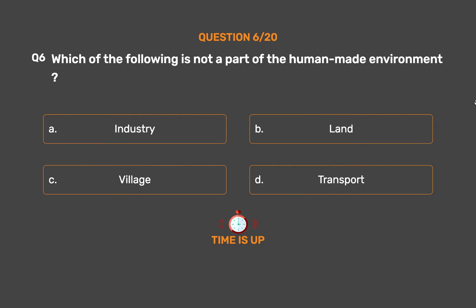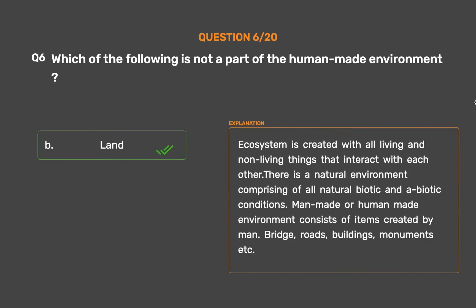The correct answer is Option B: Land. An ecosystem is created with all living and non-living things that interact with each other. There is a natural environment comprising all natural biotic and abiotic conditions. Man-made or human-made environment consists of items created by man — bridges, roads, buildings, monuments, etc.